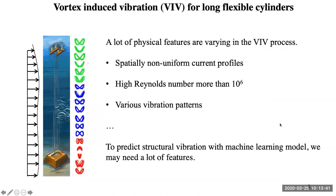For such a physics problem, it is quite challenging to obtain an accurate prediction. A lot of physical features may vary during the VIV process. For example, the current profile is not necessarily spatially uniform, and the flow speed in real deep ocean environments can be very high, making the Reynolds number much greater than 10 to the 6th. Also, because the structure is a flexible system, it has an infinite degree of freedom, and the vibration pattern could be very different under different currents. Because of these challenges, there is still not a reliable numerical simulation or empirical predictive model.